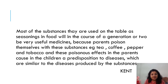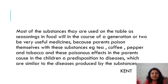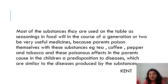Most of the substances used as seasonings in food will in the course of a generation or two be very useful medicines, because parents poison themselves with these substances. For example — tea, coffee, pepper, and tobacco — and these poisonous effects in the parents cause in the children a predisposition to diseases similar to those produced by those substances. This is given by Kent, and this is our basis in family history.